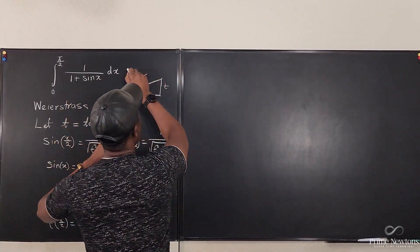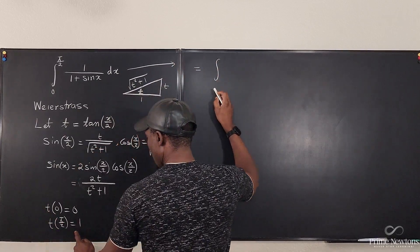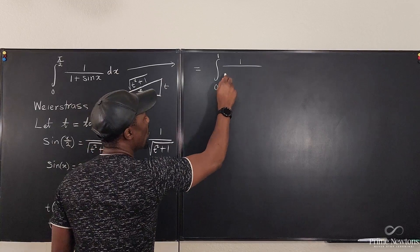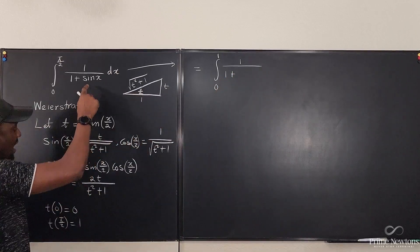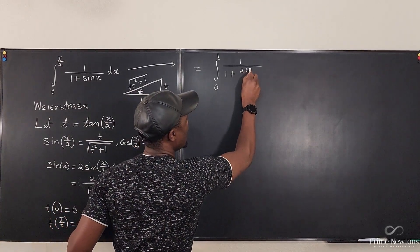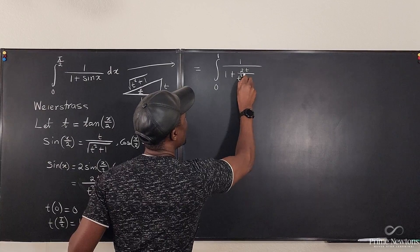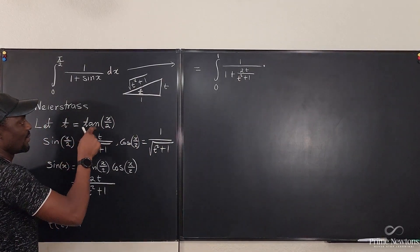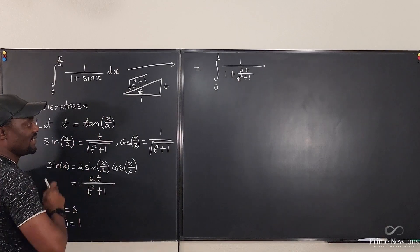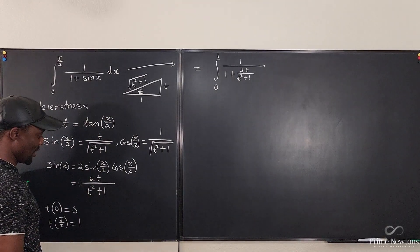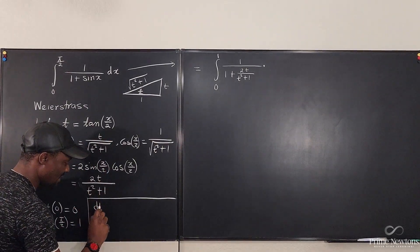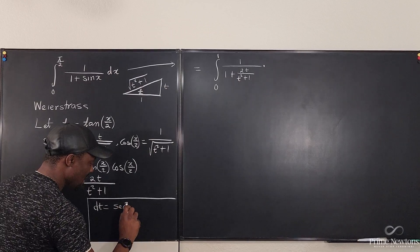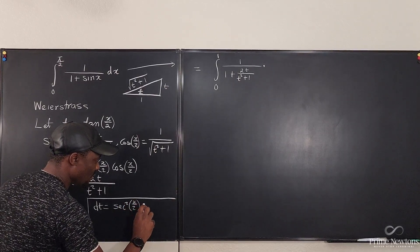Going back to the problem, it equals the integral from 0 to 1 of 1 over [1 plus sine x], and we said sine x is 2t over t squared plus 1. We also need to change dx to dt. Taking the derivative of both sides, dt equals secant squared(x/2) times one-half dx, by the chain rule.